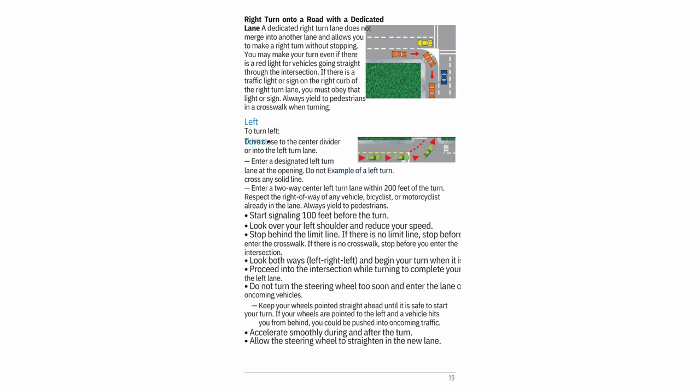Example of a right turn onto a road with a dedicated lane: A dedicated right turn lane does not merge into another lane and allows you to make a right turn without stopping. You may make your turn even if there is a red light for vehicles going straight. If there is a traffic light or sign on the right curb of the right turn lane, you must obey that light or sign. Always yield to pedestrians in a crosswalk when turning.